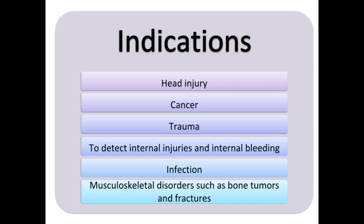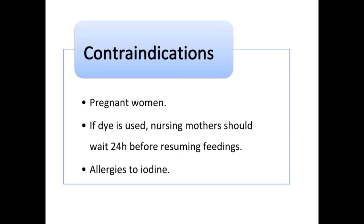CT scan remains the choice of investigation for the diagnosis and management of many central nervous system diseases and trauma to the head. CT scan is indicated in conditions like cancers, trauma to detect internal injuries and internal bleeding such as those caused by road traffic accidents, to pinpoint the location of a tumor, infection, or blood clot, and in muscle and bone disorders such as bone tumors and fractures.